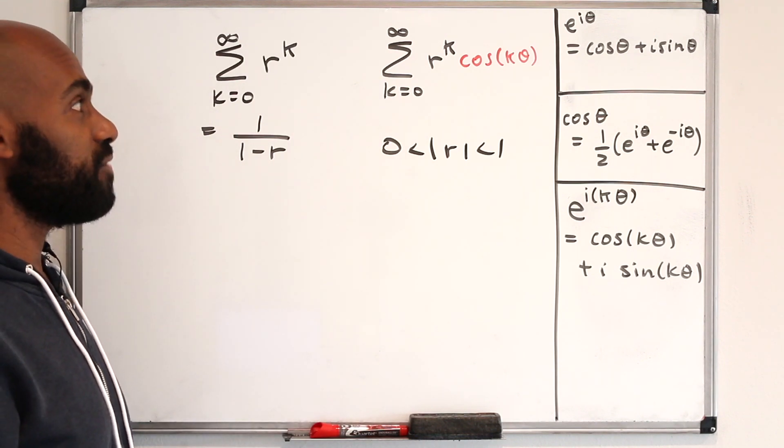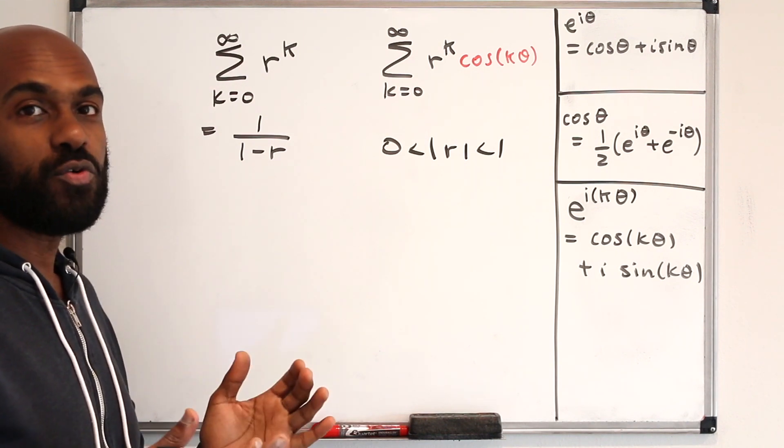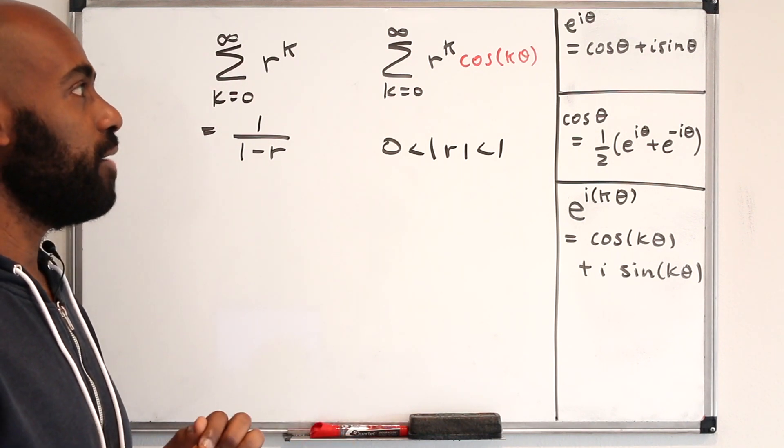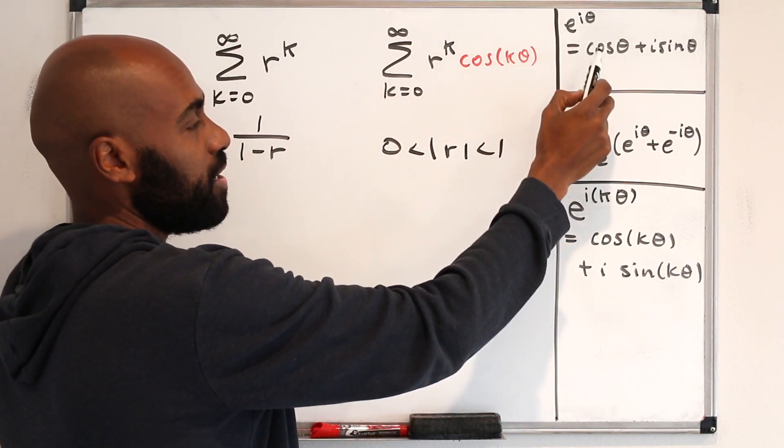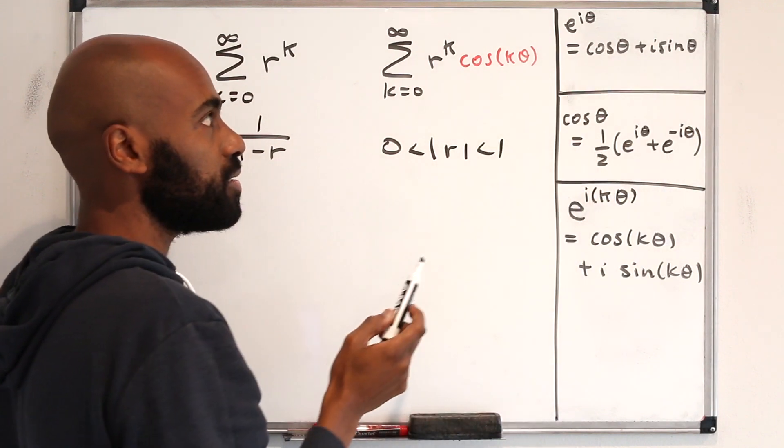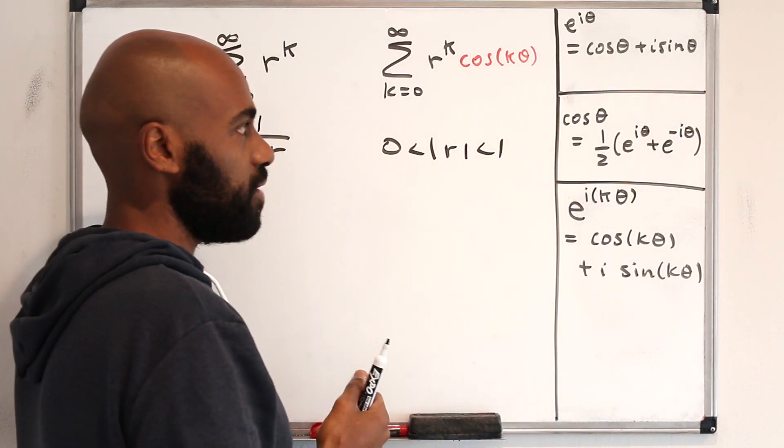We're going to actually get an explicit formula for what this is. If you want to try this on your own, here are a few ideas that will help along the way. First of all, there's this theorem that allows you to relate e to the i theta to cosines and sines, writing it as a complex number, cosine theta plus i sine theta.